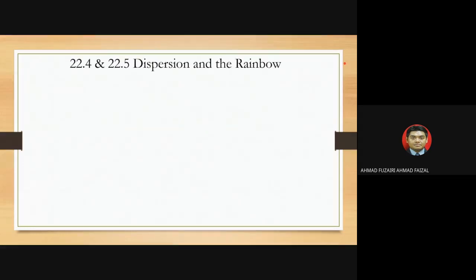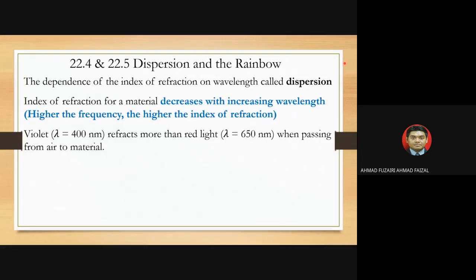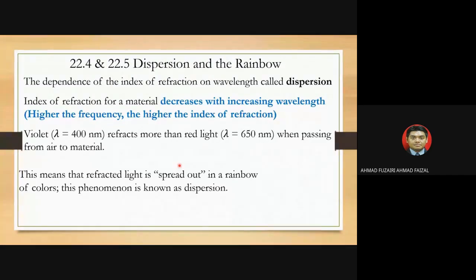Dispersion and the rainbow: dispersion is the dependence of the index of refraction on wavelength. The index of refraction for a material decreases with increasing wavelength — the higher the frequency, the higher the index of refraction. In Snell's law, the angle of refraction depends on wavelength. For example, violet light (400 nm, shorter wavelength) refracts more than red light (longer wavelength) when passing from air to a material, spreading light into rainbow colors.